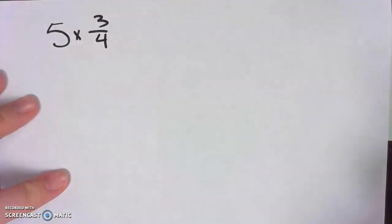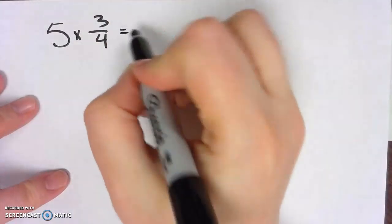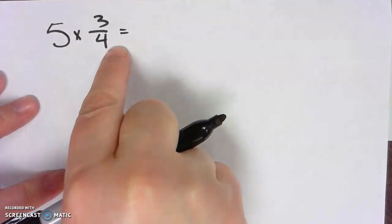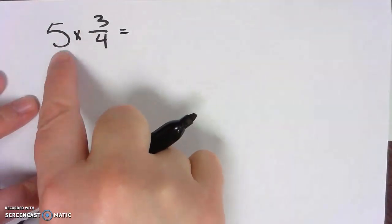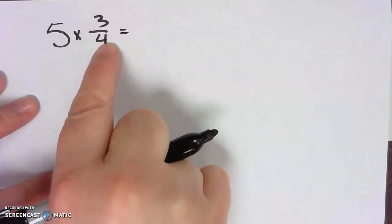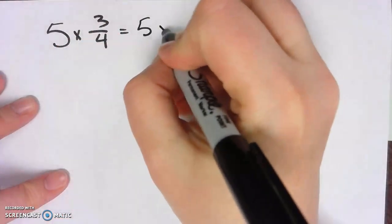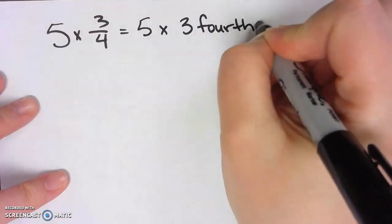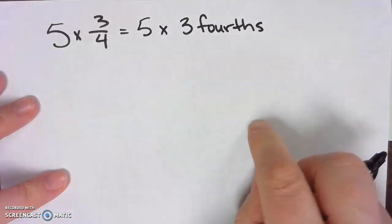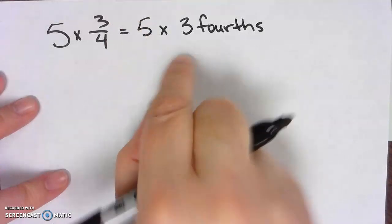So 5 times 3/4. Now I am going to break that into unit form first. To break it into unit form, all I have to do is just say it: 5 times 3 fourths. And now I'm going to associate the five and the three. That's making these friends play together.